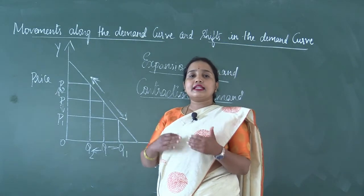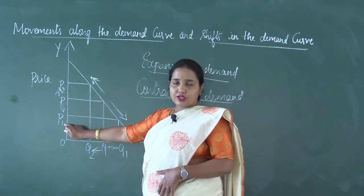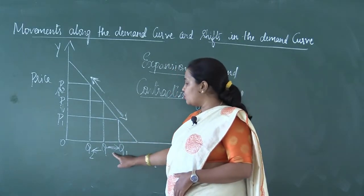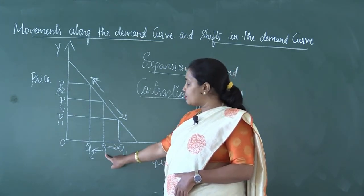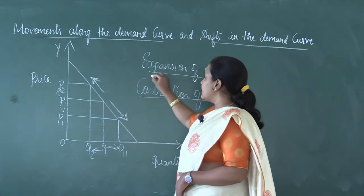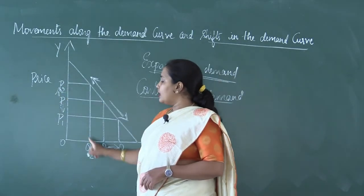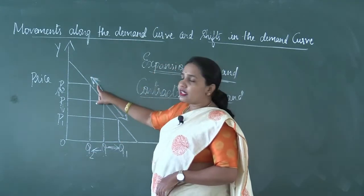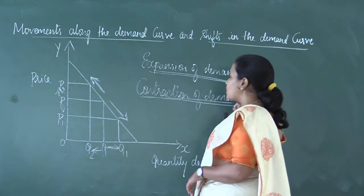First we need to consider when there is a fall in price. When the price falls from P to P1, demand expands from Q to Q1. You can see the increase in demand, for which we call it expansion of demand. The demand curve moves downward, and this is called expansion of demand. Likewise, when the price increases from P to P2, demand contracts from Q to Q2. The movement along the demand curve is upward, and this is called contraction of demand.